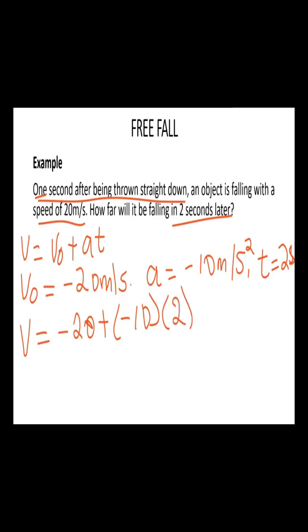Which will be negative 20 minus 20, which equals to v, negative 40 meters per second.